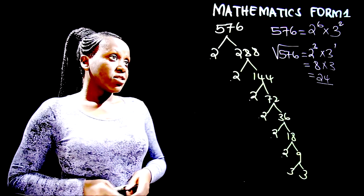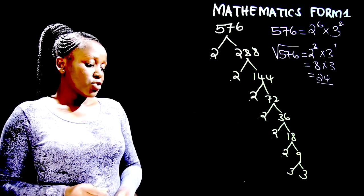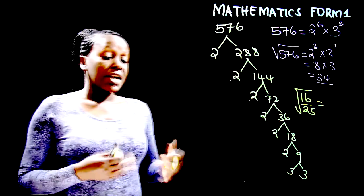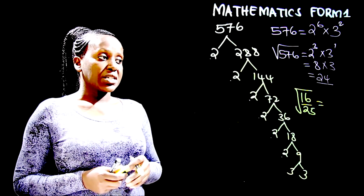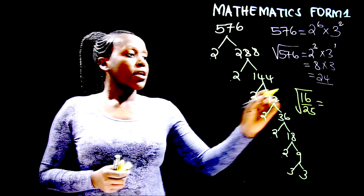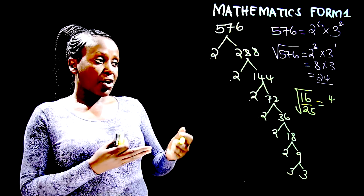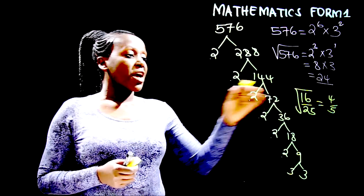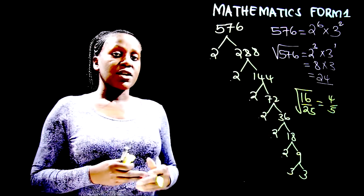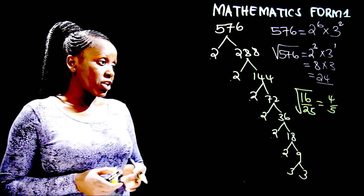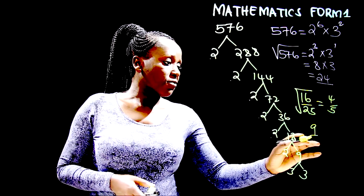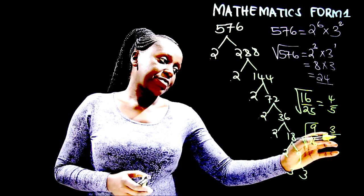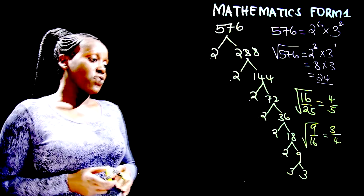Now if you are dealing with a fraction and need to get the square root, you follow the same rules. For a fraction like 16 over 25, get the square root of the numerator and the square root of the denominator separately. The square root of 16 is 4, and the square root of 25 is 5. For another fraction like 9 over 16, the square root of 9 is 3 and the square root of 16 is 4, so the answer is 3 over 4.